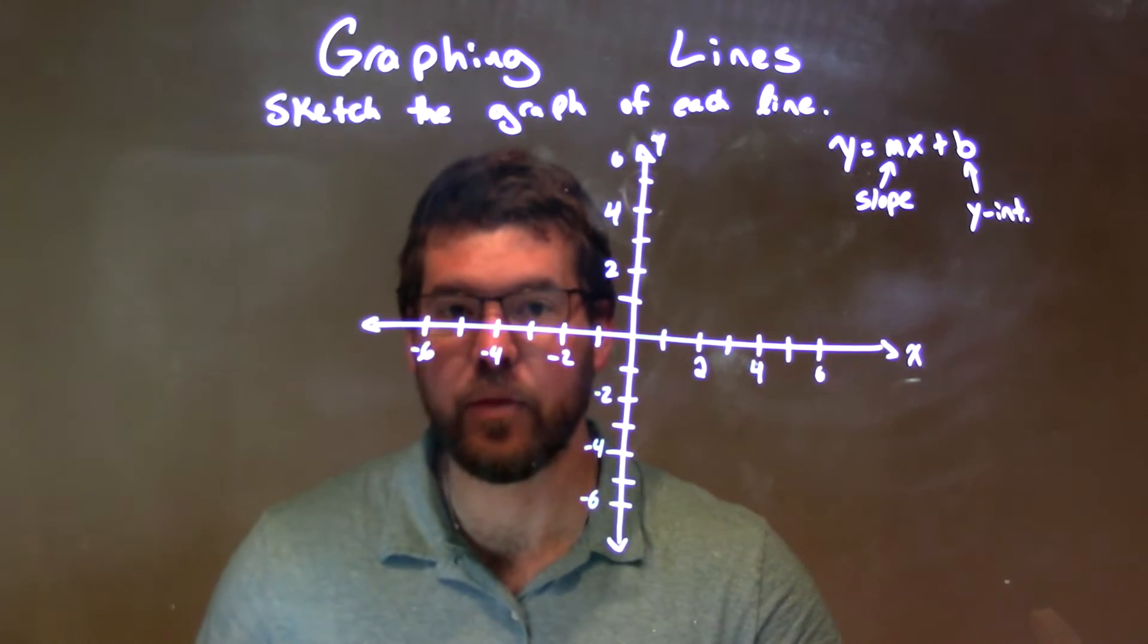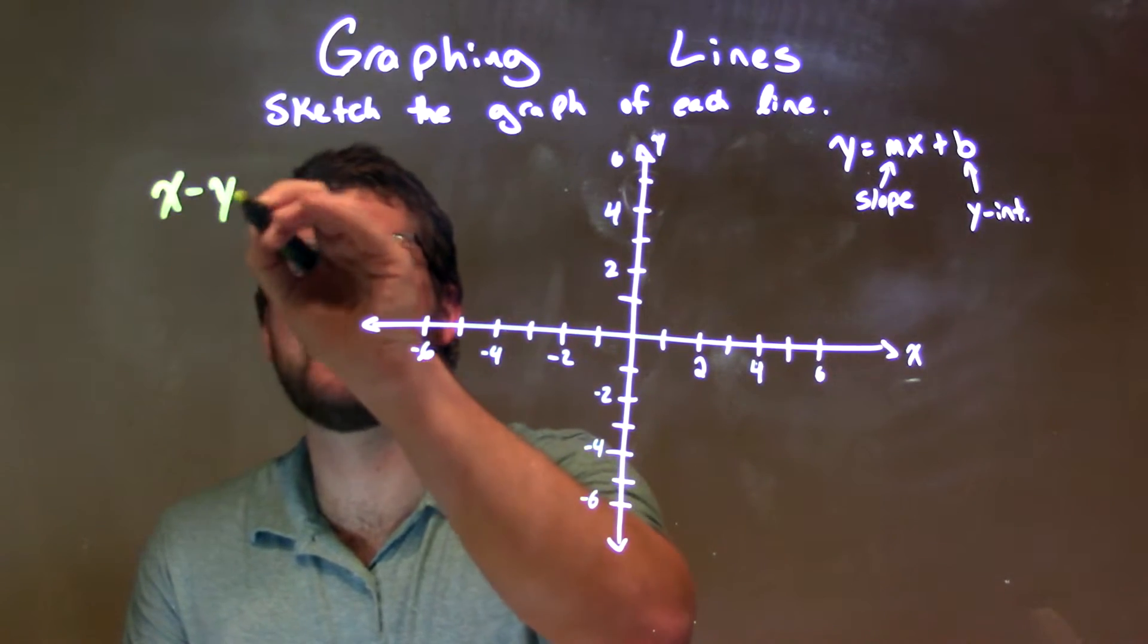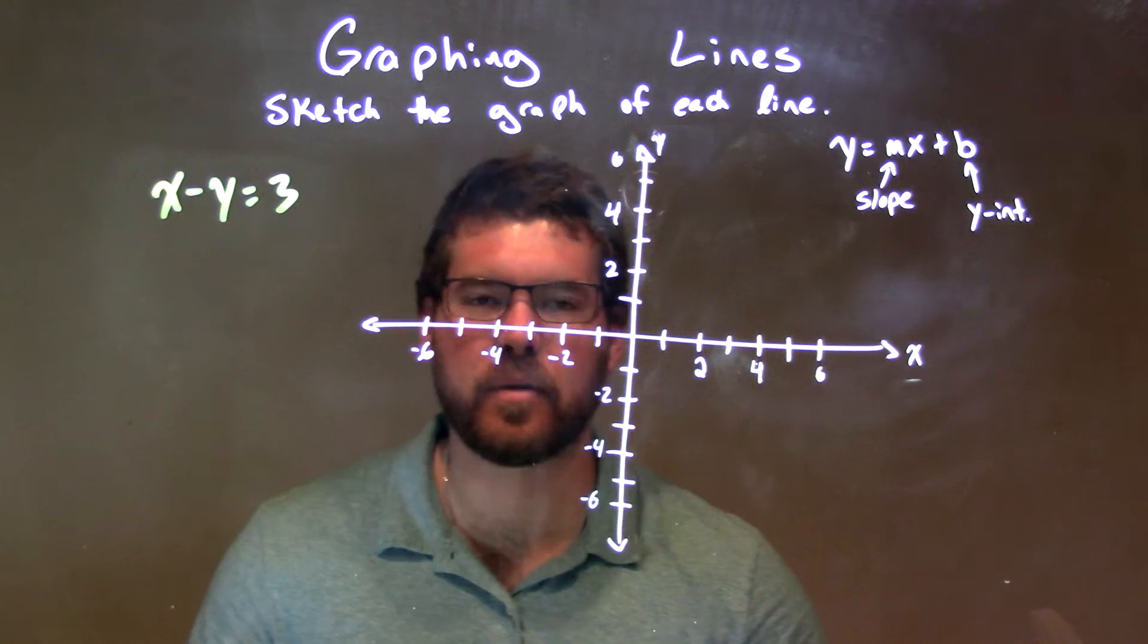If I was given this graph, this whole line, x minus y equals positive 3.